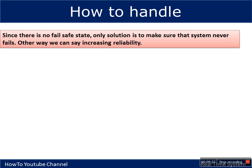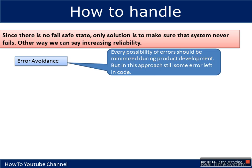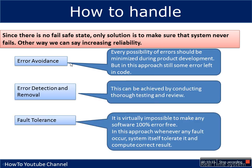Since there is no fail-safe state for safety-critical systems, the only solution to prevent damage is to increase the reliability of those systems. There are multiple ways to do this. The first is error avoidance, which states that every possibility of error should be minimized during product development — though it cannot be achieved completely, as some errors are always left during development.